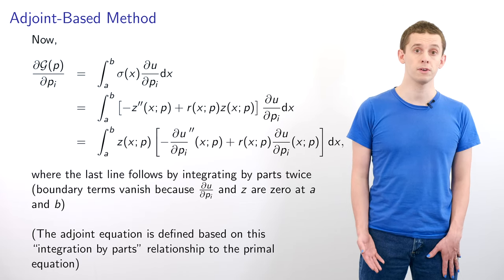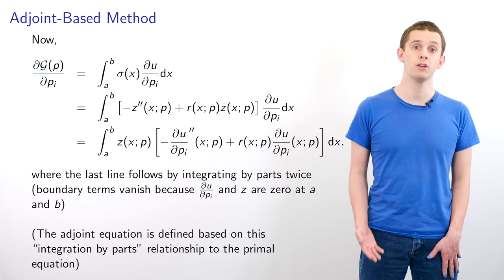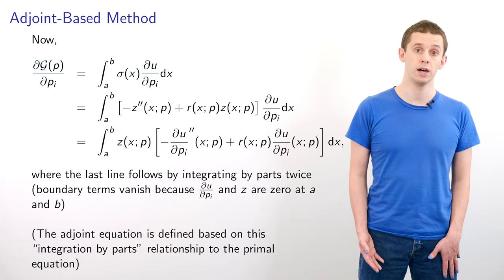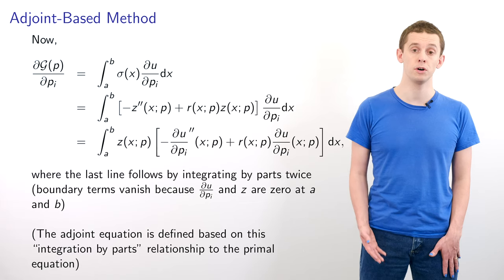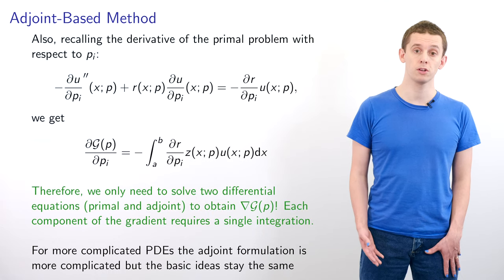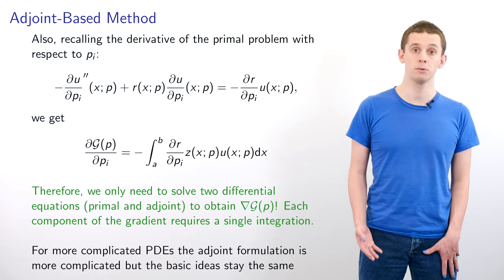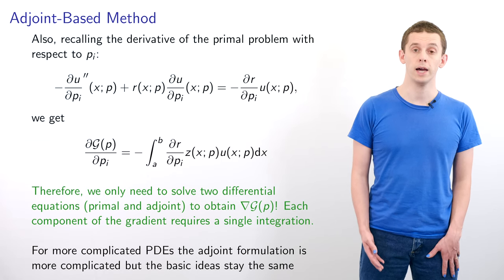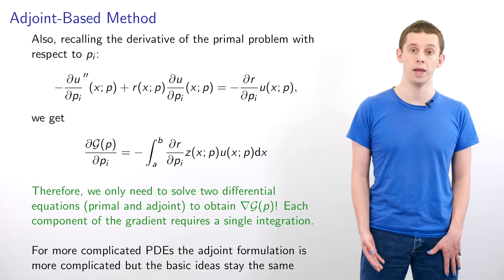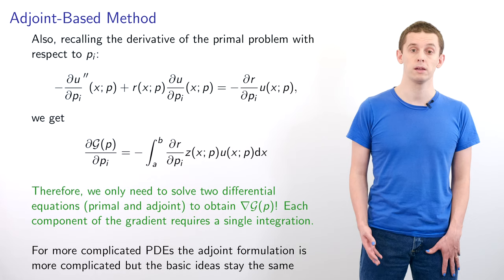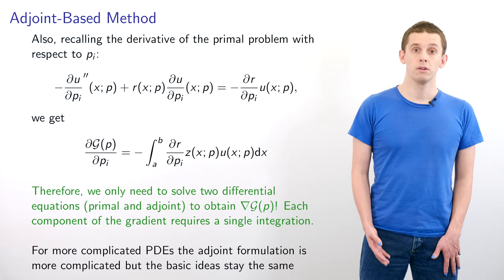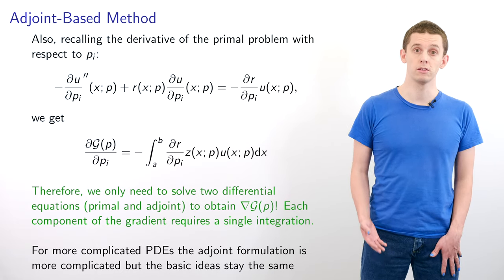For this specific form of adjoint equation something interesting happens: the bracketed term is now the left-hand side of our equation for the derivative of the primal problem with respect to p_i. If we recall this equation, we can substitute into our integral expression, which leaves us with dG/dp_i = -∫[a to b] (dr/dp_i)z(x;p)u(x;p)dx. This results in a dramatic simplification.